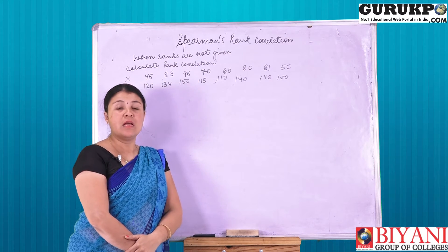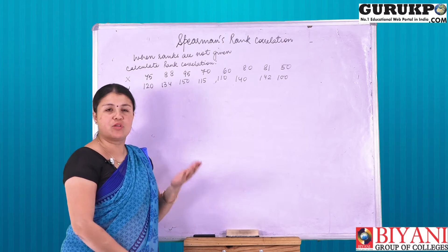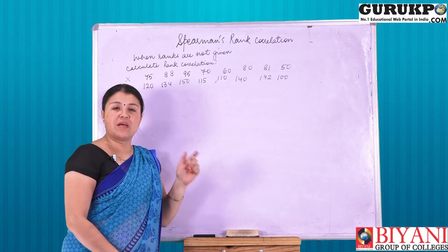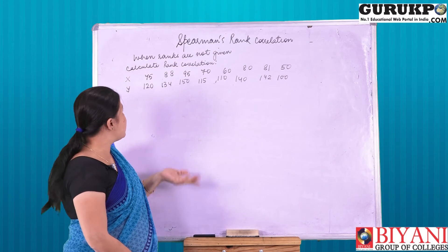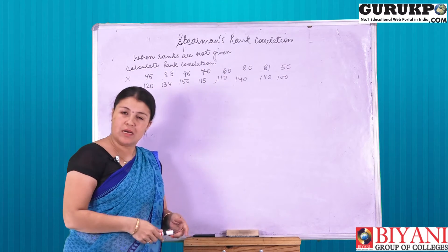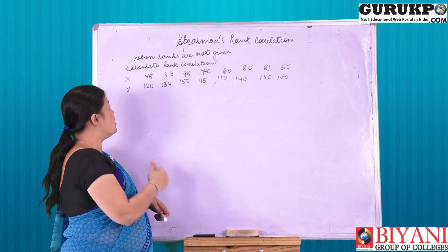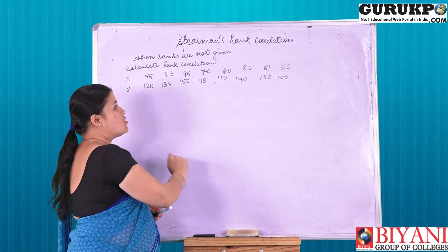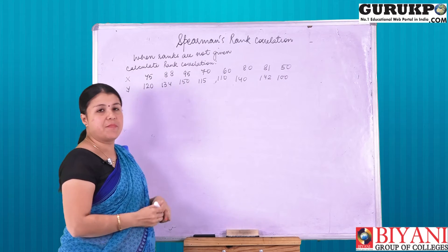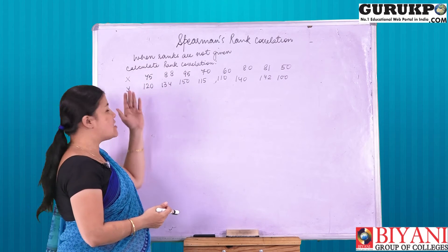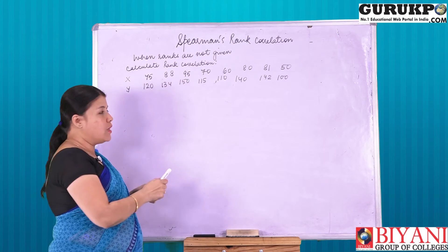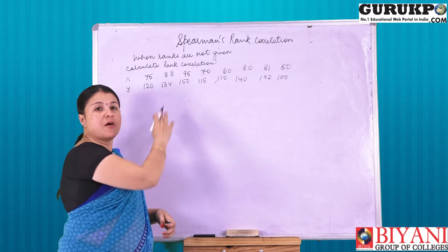Earlier in my previous lecture, I have already discussed about the topic when the ranks are given to us. In my today's video lecture, I would like to discuss with you how to solve the question when ranks are not given to us. Now look at the question — calculate rank correlation. We have given the marks given by the judges, that is judge X and judge Y. As per the ranks given, we have to first form a table.